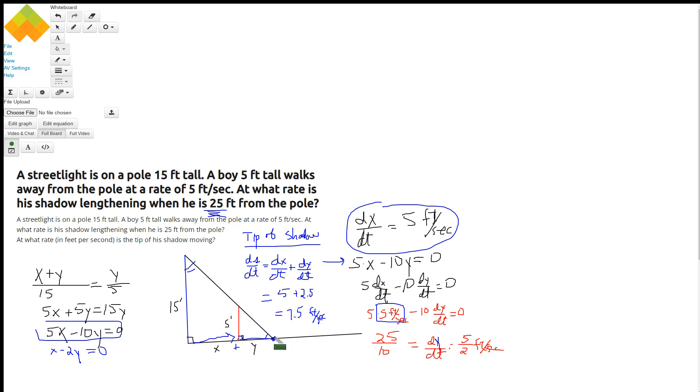Now the tip of the shadow is really this distance right here. How fast is that changing? Well, you could say that the tip of the shadow, s, equals x plus y. And if we take the derivative with respect to t, ds/dt equals dx/dt plus dy/dt.